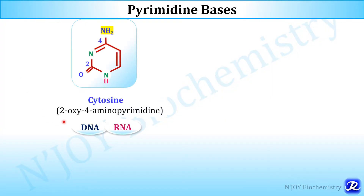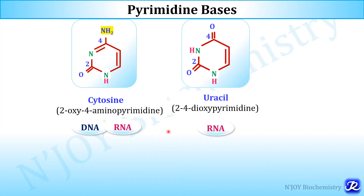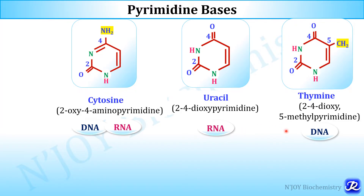Cytosine is also called 2-oxy-4-aminopyrimidine because oxygen is present at position 2 and amino group is attached at position 4; it is present in both DNA and RNA. Uracil is called 2,4-dioxypyrimidine due to oxygen at both second and fourth positions and is present in RNA only. Thymine is called 2,4-dioxy-5-methylpyrimidine because oxygen is at positions 2 and 4 and a methyl group is at position 5; thymine is exclusively present in DNA.